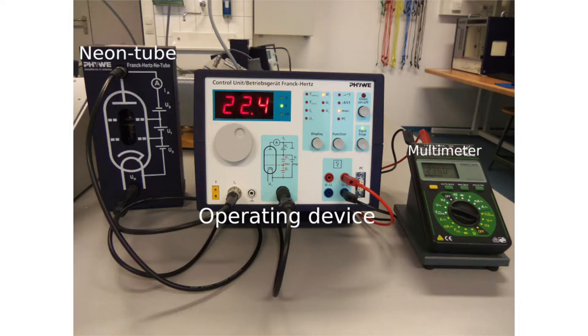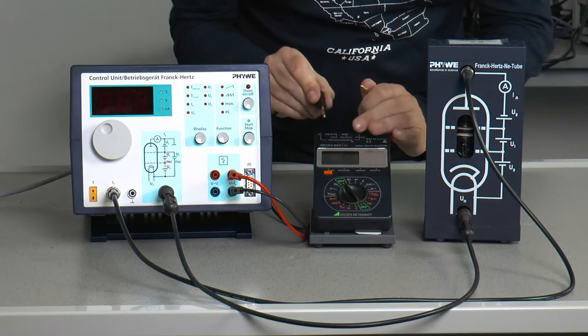A Frank-Hertz tube, an operating device for the supply voltages, and a multimeter for measuring current are used.